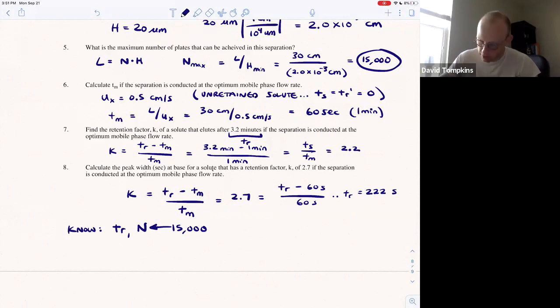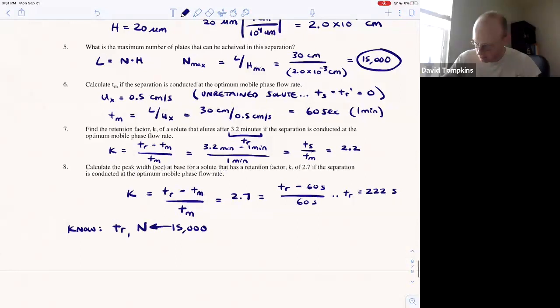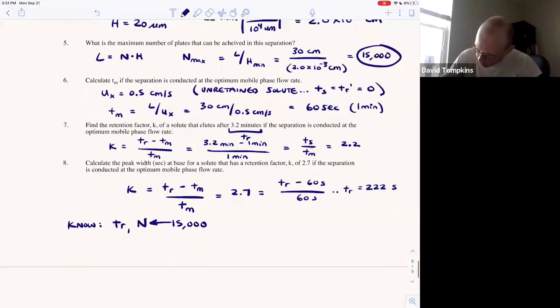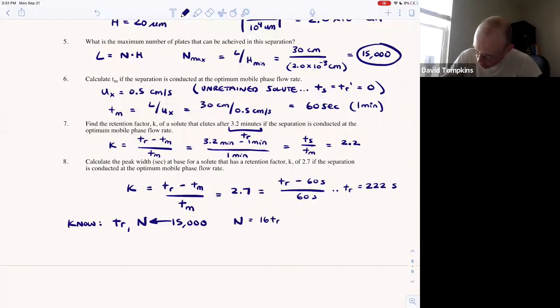Optimized or when conducted at the optimum flow rate, maximum N and minimum H. So recall from an earlier video that the number of plates is equal to 16 times the retention time of that compound squared over the width at the base, W sub B squared.